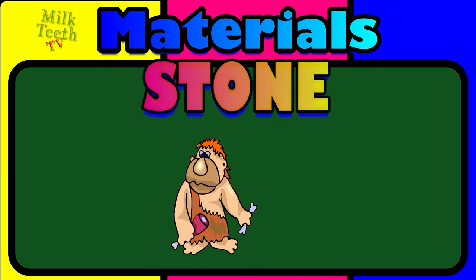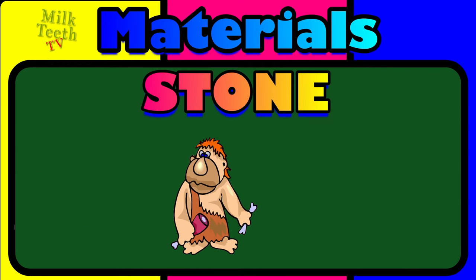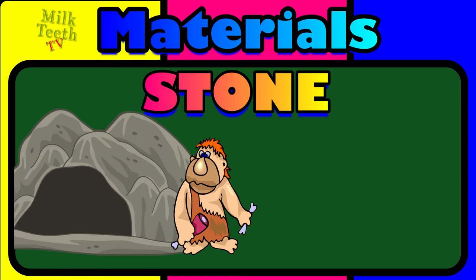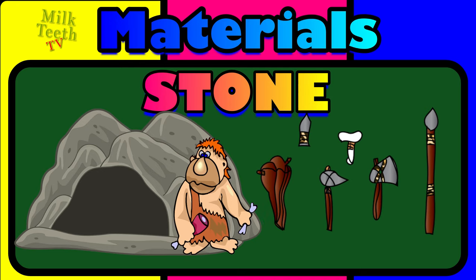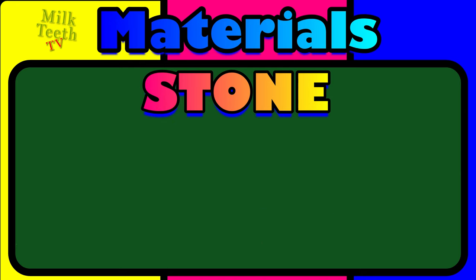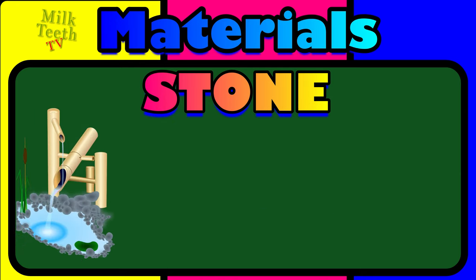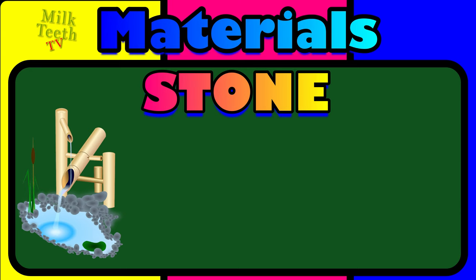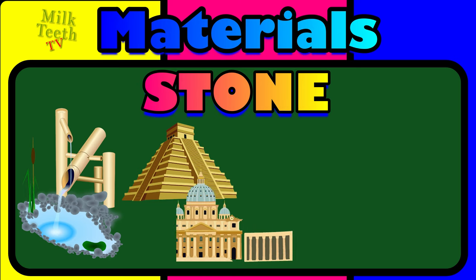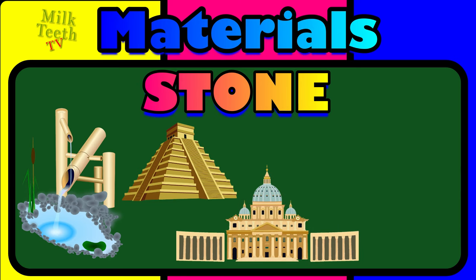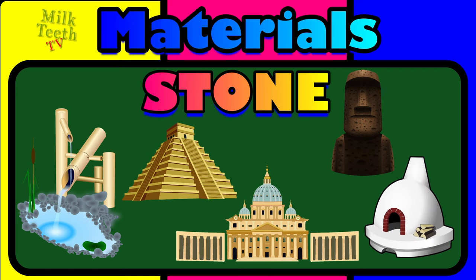During prehistoric times, stone was used by early man to make his home — that is, caves — and also all the tools required for his living. Stone has been used to make fountains, buildings like the prehistoric Chichen Itza, palaces and mansions, sculptures, and also stone furnaces.